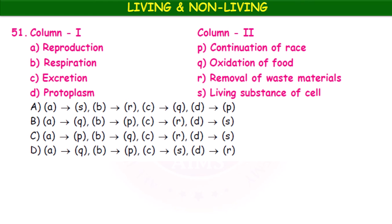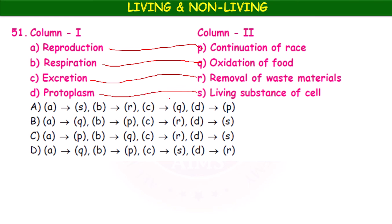The last question asks you to match Column 1 with Column 2. Column 1: reproduction, respiration, excretion, protoplasm. Column 2: continuation of race, oxidation of food, removal of waste materials, living substance of cells. The matches are: reproduction — continuation of race; respiration — oxidation of food materials to release energy; excretion — removal of waste materials; protoplasm — living substance of cells. So the answer is option C: A-P, B-Q, C-R, D-S.